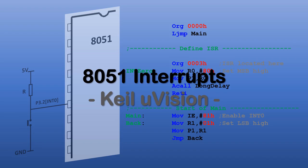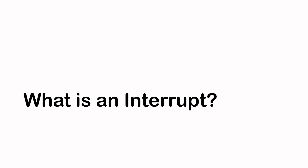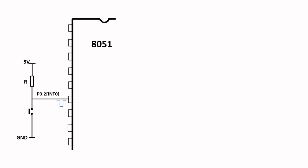Hello and welcome. In this video I'm going to explore the 8051 interrupt system using the Keil Microvision. I have the 8051 with p3.2, which is interrupt zero, connected to a resistor in series with a push button switch which is grounded at one end. I can use this switch to simulate and generate an interrupt signal for the 8051.